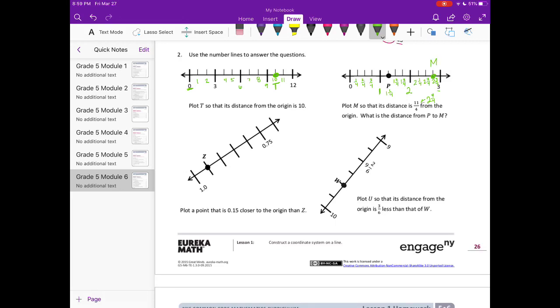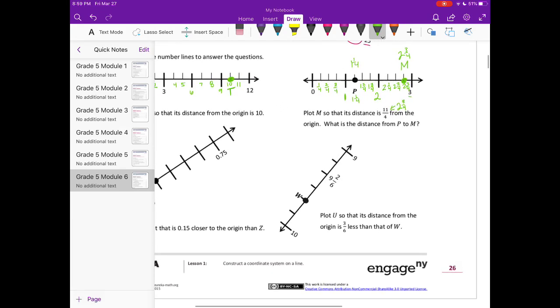What is the distance from P to M? So P is at 1 and 1 fourth, and M is at 2 and 3 fourths. So the distance, or the difference between them, 2 and 3 fourths minus 1 and 1 fourth, would be 1 and 2 fourths, or 1 and 1 half is the distance.